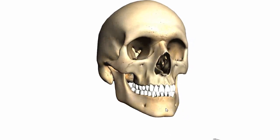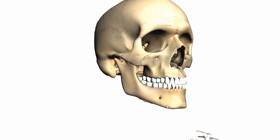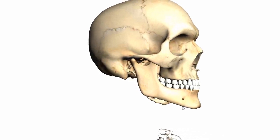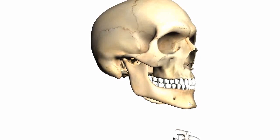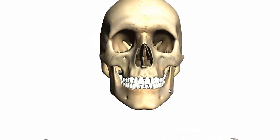On the base of the mandible, you've got these protuberances — these little bumps. If I just rotate it around laterally, you can see this slight bump here. And this is what's known as the mental protuberance. It lies in the midline where the two parts of the body of the mandible meet.